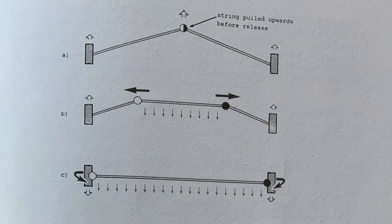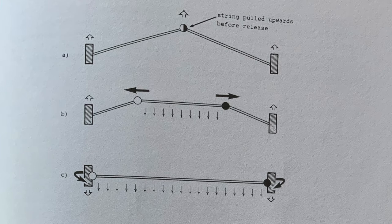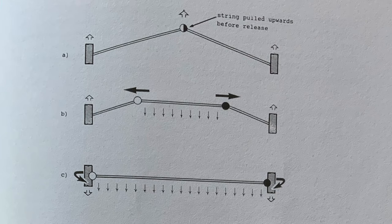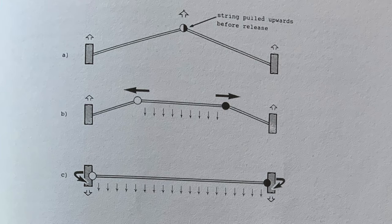It is helpful to see how waveforms actually form in the string. If you look at the examples on this page, it represents a completely flexible string stretched between two fixed points and drawn upwards in the middle. The moment it is released, the angle in the middle will move outwards in both directions along the string at a speed which is determined by the mass of the string per unit of length and the tension in the string.